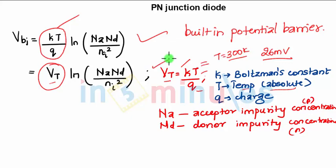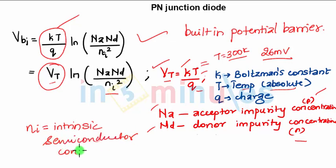So when you substitute all the standard values and temperature is 300 Kelvin, you will get VT as 26 millivolts. Now what is Na and Nd? Acceptor impurity concentration for P type, Nd is donor impurity concentration for N type, and what is ni? It is nothing but the intrinsic semiconductor concentration. What do you mean by intrinsic semiconductor concentration? Concentration of total number of free electrons and holes.